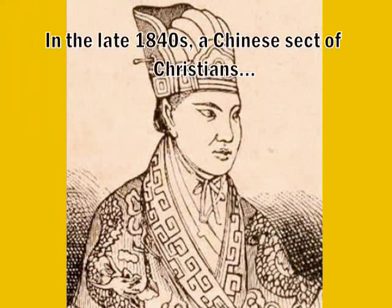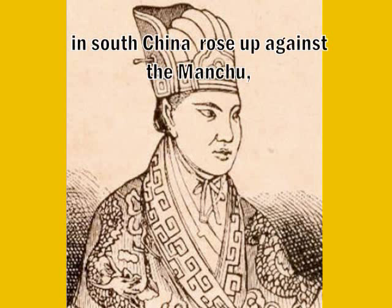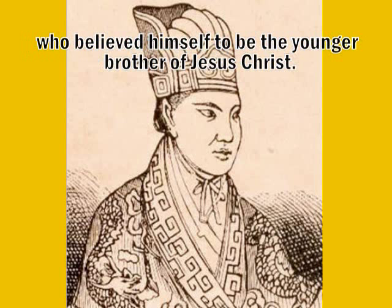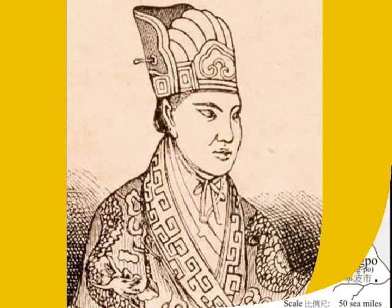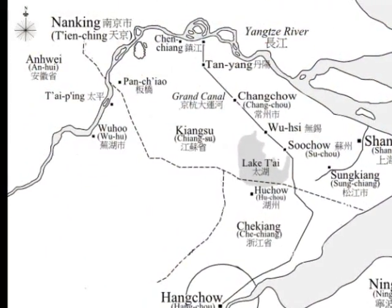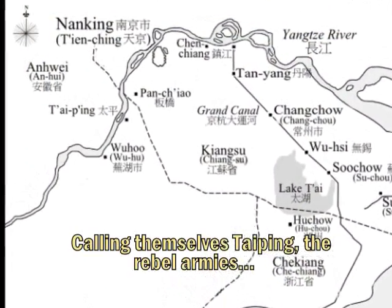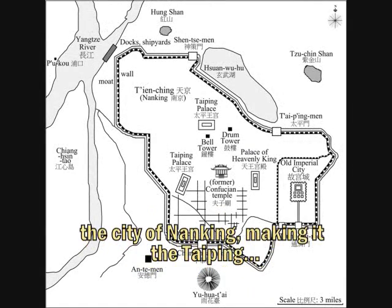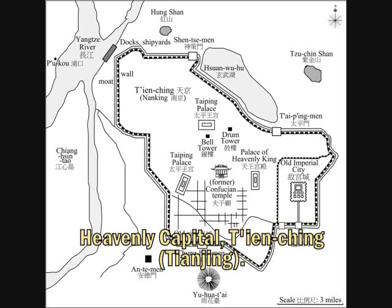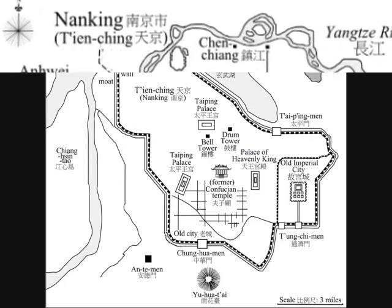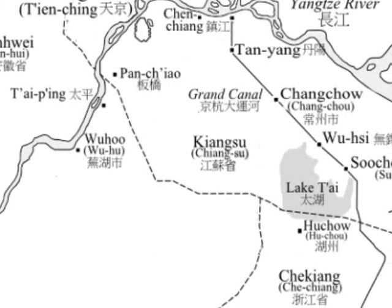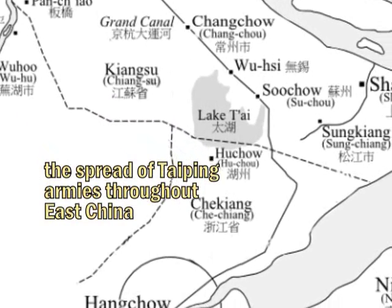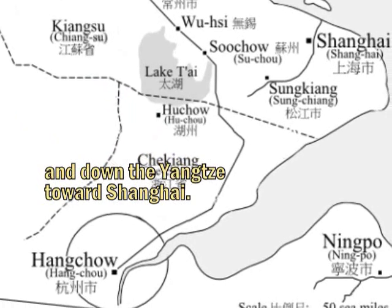In the late 1840s, a Chinese sect of Christians in South China rose up against the Manchu, led by Hong Xiuquan, who believed himself to be the younger brother of Jesus Christ. Calling themselves Taiping, the rebel armies fought their way north and in 1853 captured the city of Nanking, making it the Taiping heavenly capital, Tianjin. In the years following, imperial armies were powerless to prevent the spread of Taiping armies throughout East China and down the Yangtze toward Shanghai.